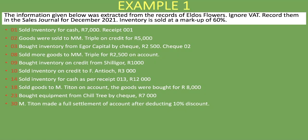On the 1st of the month, we sold inventory for cash, 7,000 Rand, receipt 001. Do we put it in the sales journal? No, because this is a cash sale, not a credit sale. So we do not put this one in the sales journal — items not going in will be highlighted in purple, and those that do will be highlighted in black.